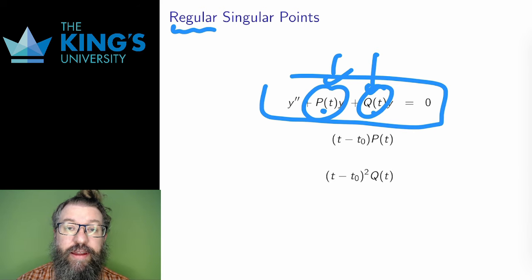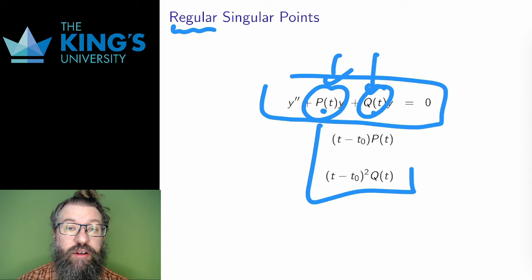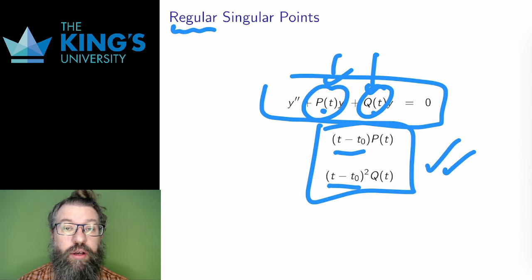That is, these two functions need to be analytic at t0. Multiplying by one power for t and multiplying by two powers for t0 needs to basically get rid of the undefined point, get rid of the asymptote, for both p and q. This is the technical addition that will allow the process in this video to work. It means that the problems with p and q aren't too bad. The asymptotes are controllable.